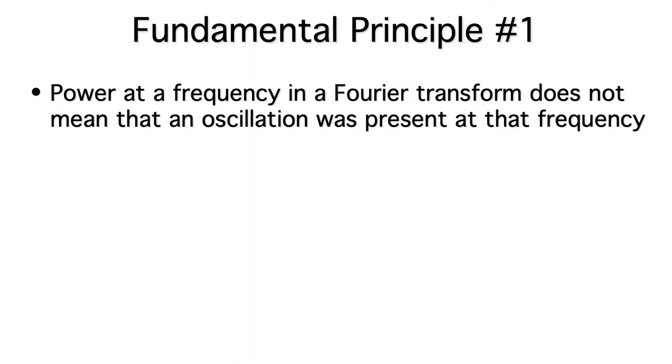Okay, here's fundamental principle number one. Power at a given frequency in a Fourier transform does not mean that an oscillation was actually present in that frequency. What the? Huh? Doesn't a Fourier transform tell us about the oscillations in the data? If it doesn't, then what does it tell us?